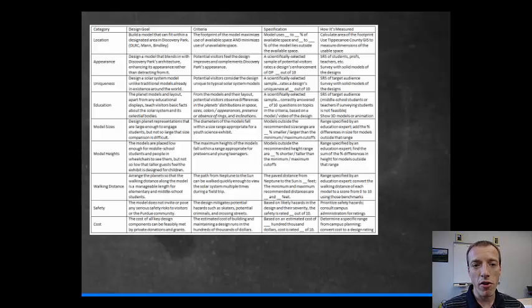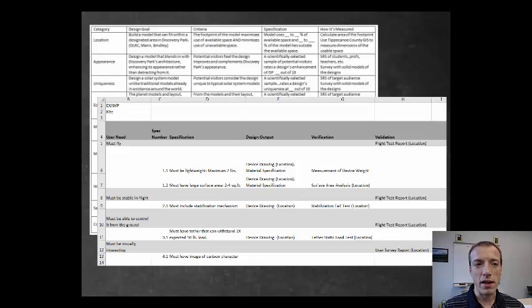As you get further into a project, I like to use a format like this. Now again, it may be hard to read in your slide. But what we have is a column of user needs that are numbered 1, 2, 3, and 4. And each of those have specifications numbered 1.1, 1.2, and so forth. So that you can say these specifications are a subset of these big user needs.